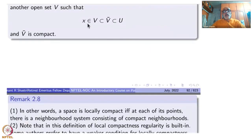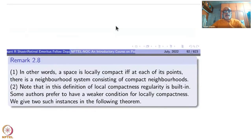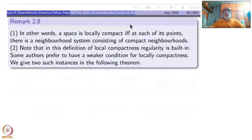If x belongs to U (U open), there is such a neighborhood — without even compactness, this is regularity. So perhaps my definition is too strong. However, it is in the literature, and out of several definitions I have adopted this one for local compactness. Some authors prefer to have a weaker condition of locally compact, and I give two such instances which are very common.